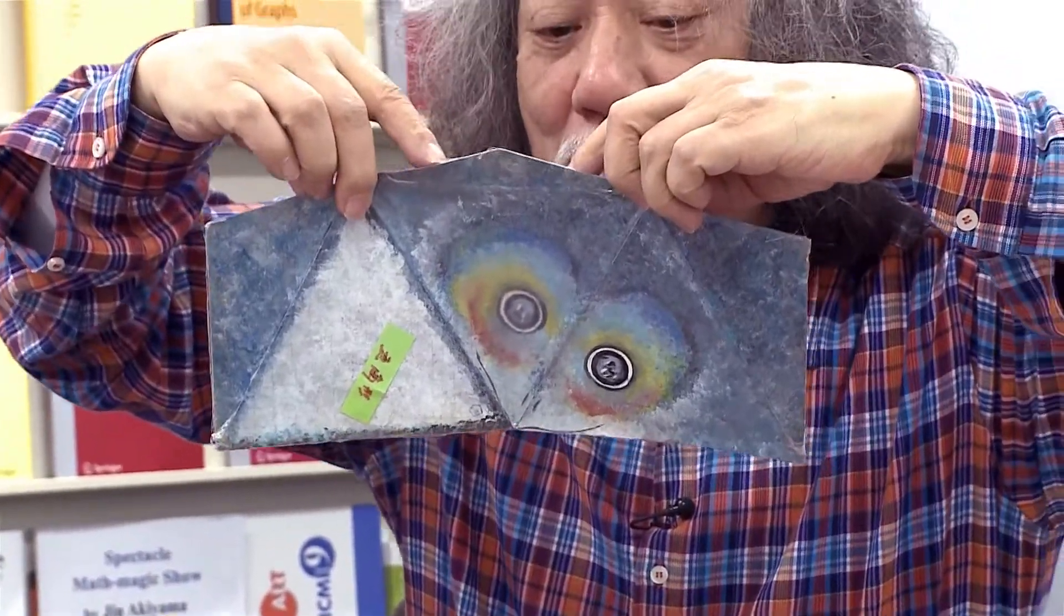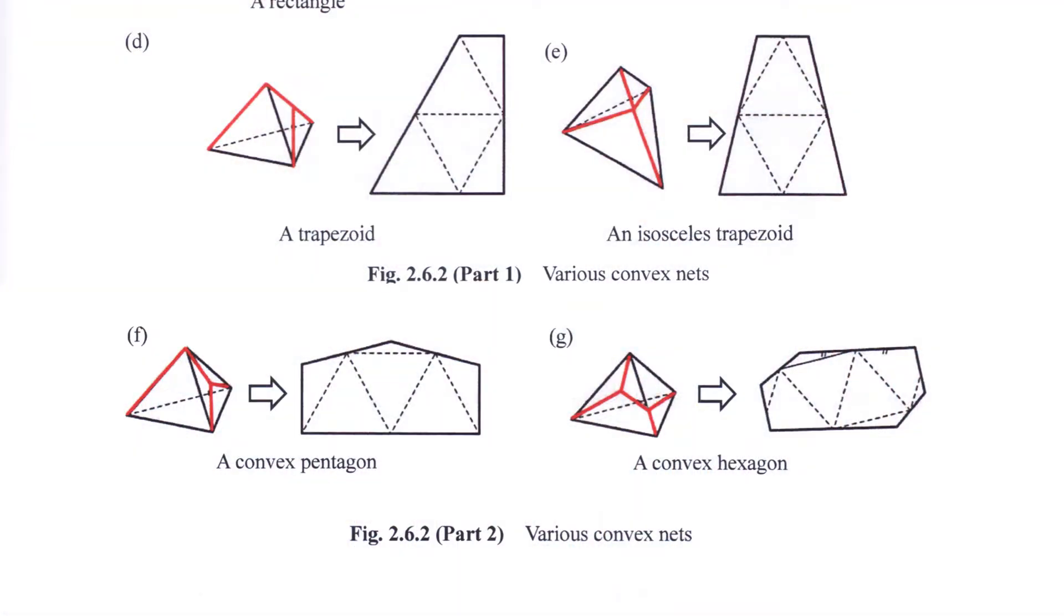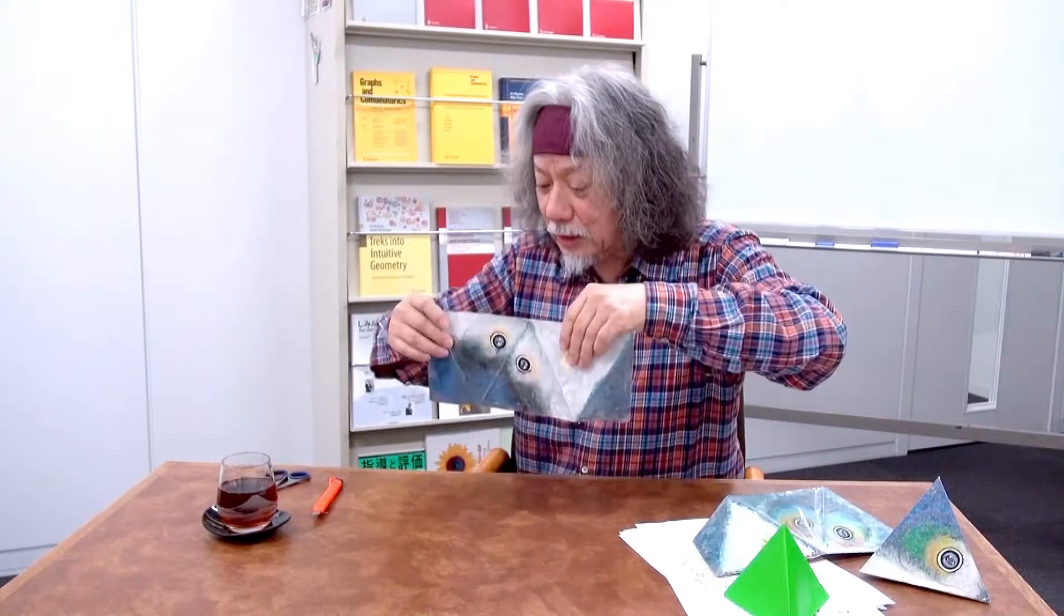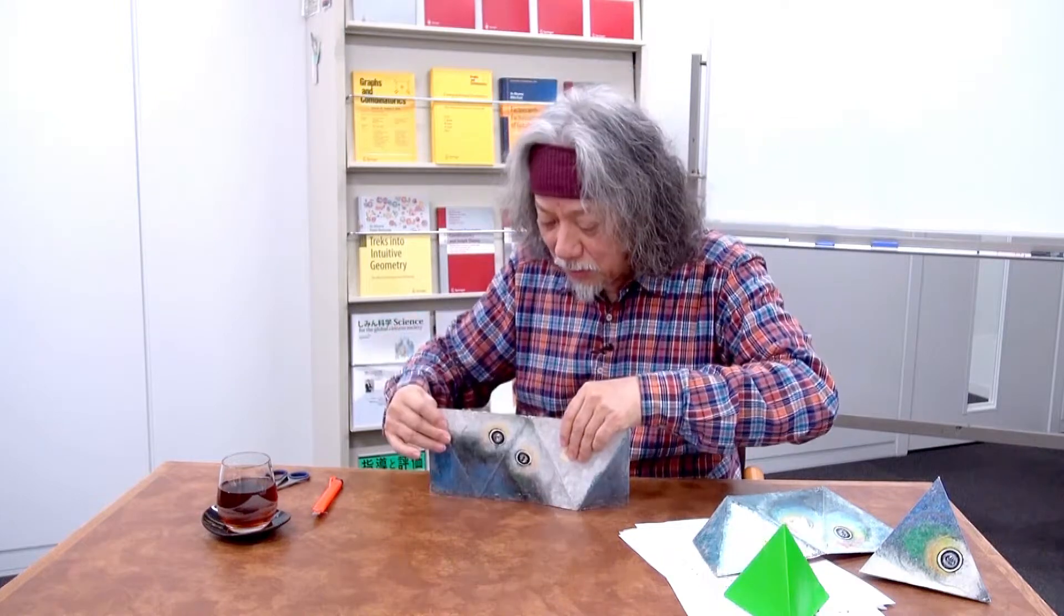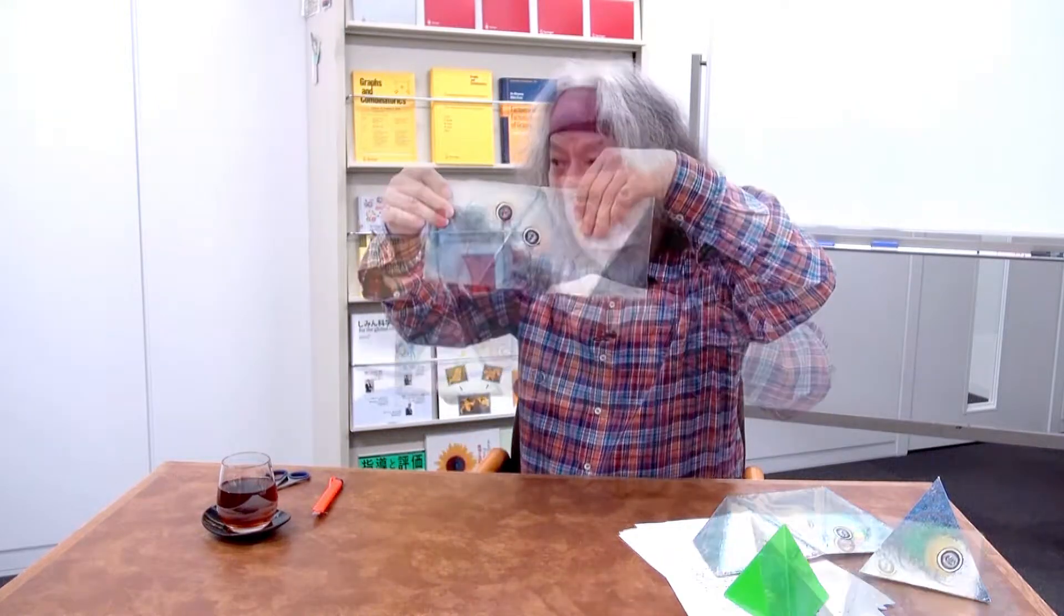Actually, you can do the same for the house-shaped pentagons and parallelo hexagons. Let's look at things from a different angle here. If this rectangle is a tile, the tiles are laid out like this, making sure there are no gaps.